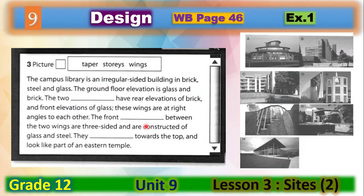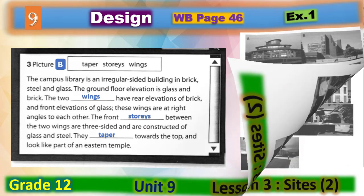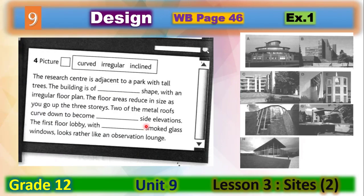Number three: the words are wings, stories, tapered — and it's picture B. The last one: the words are curved, regular, inclined. The research center is adjacent to a park with tall trees. The building is of irregular shape with an irregular floor plan. The floor areas reduce in size as you go up the three stories. Two of the metal roofs curve down to become inclined elevations. The first floor lobby has curved smoked glass windows — and we are talking about picture G.